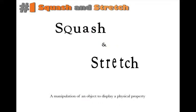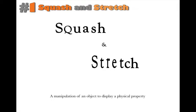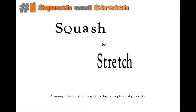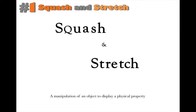Number one: squash and stretch. Squash and stretch is used to get an object or character to adhere to real-world physics. When an object is struck, it changes shape. When a body falls from the sky and hits the floor, it squashes. It's a good way of displaying the physical properties of an object or character.